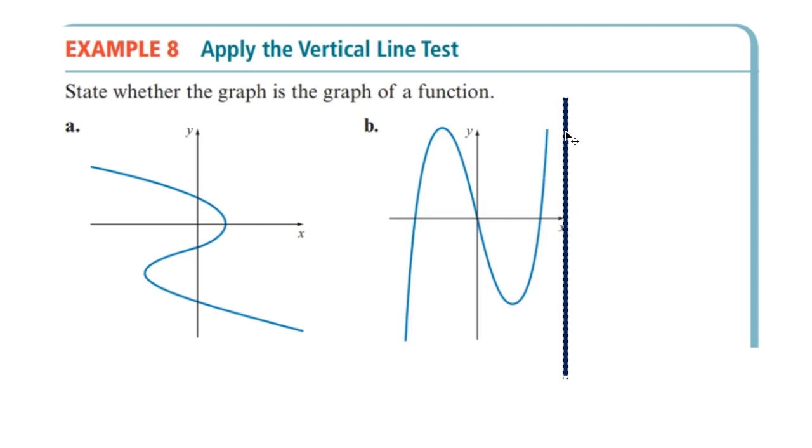Nice. All right, so hopefully this makes sense. You can imagine a vertical line going across here and see when it's not a function. And we can see it's not a function for a, and it is a function for b. Let me know if you have any concerns about the vertical line test and determining if a graph is a function. I'm more than happy to help.